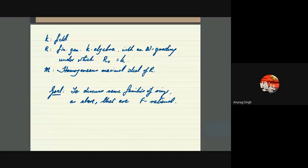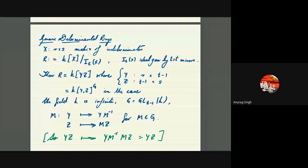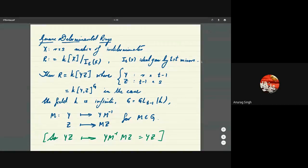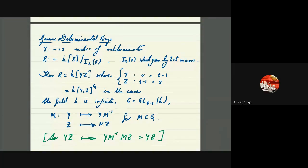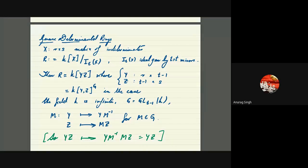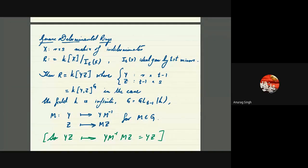Some other large families of rings include determinantal rings and their variations. Let me start with generic determinantal rings. Over the fixed field K, take an r by s matrix of indeterminates, and look at the homomorphic image of the polynomial ring in those indeterminates modulo the ideal generated by size-T minors of that matrix. So K adjoin X means a polynomial ring in r times s variables, and I_T(X) is the ideal generated by the T by T minors — the determinants of T by T submatrices.